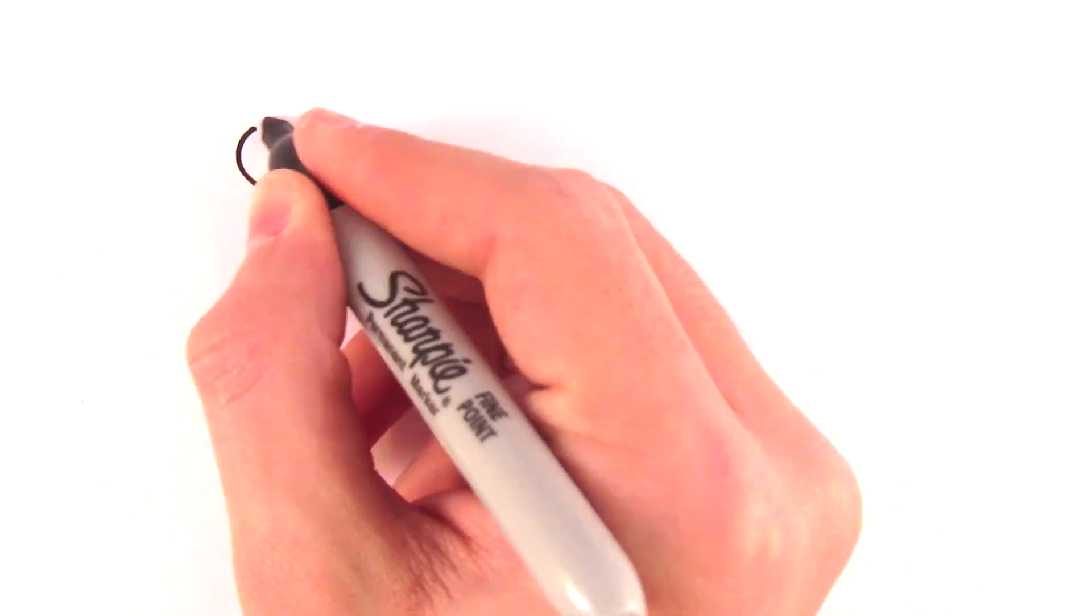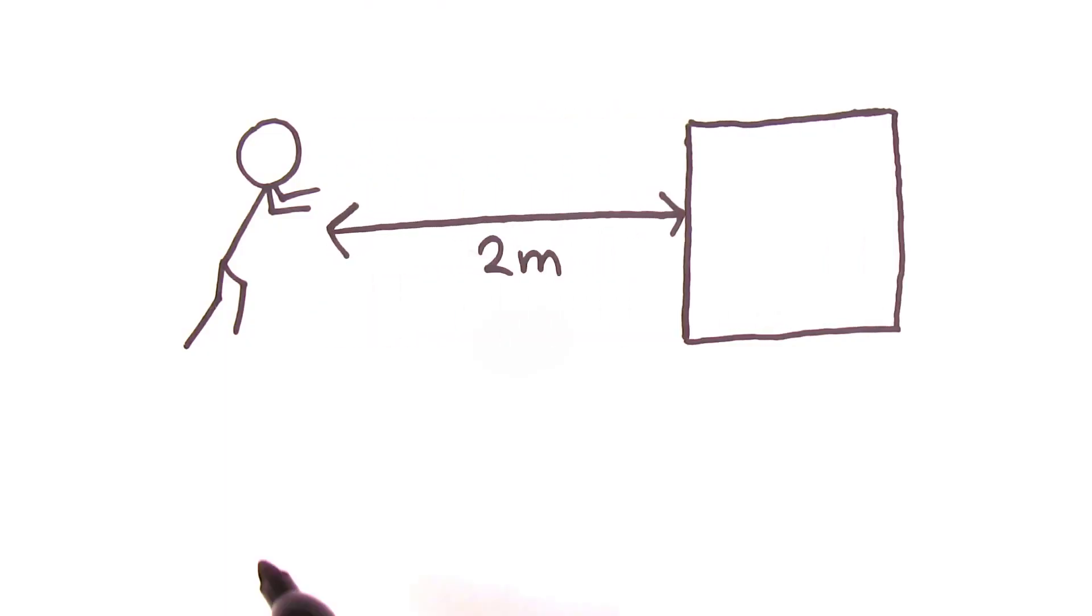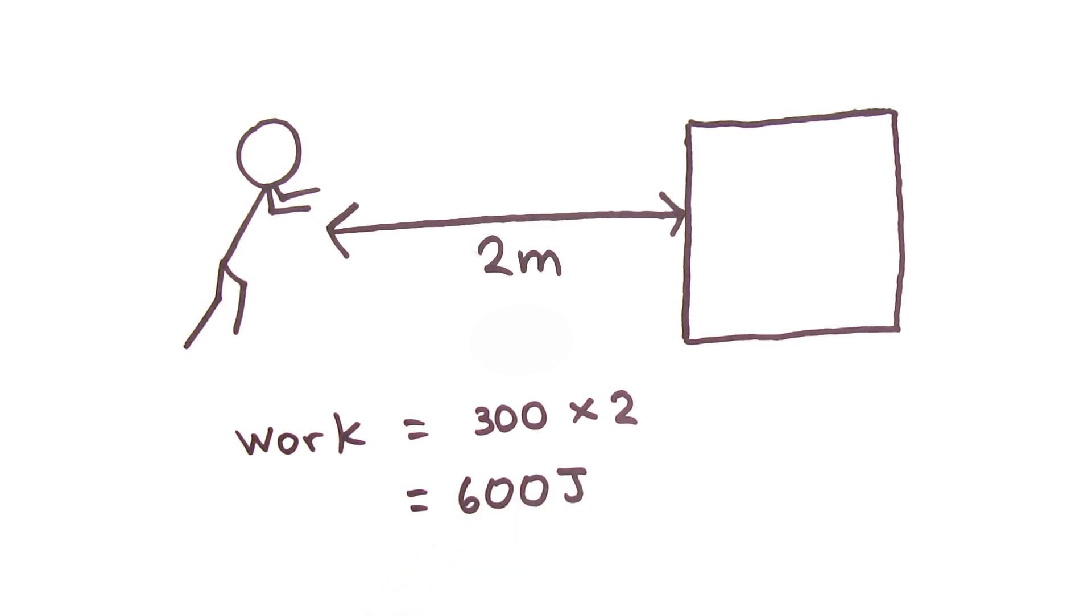If this guy pushes the box with a force of 300 newtons and he moves it by 2 metres, the work done is 600 joules.